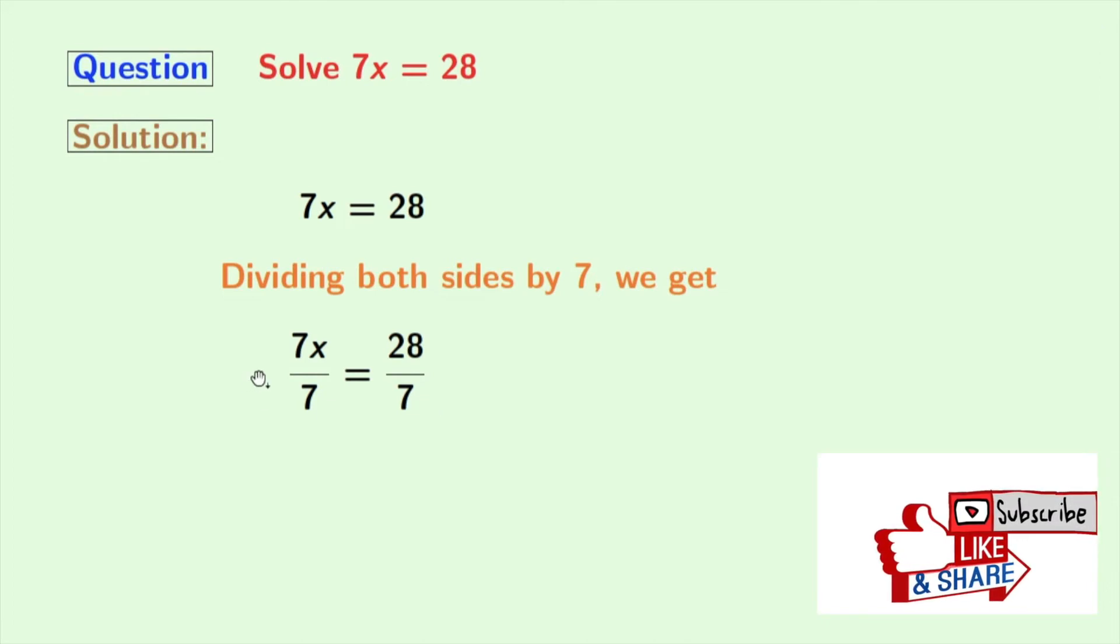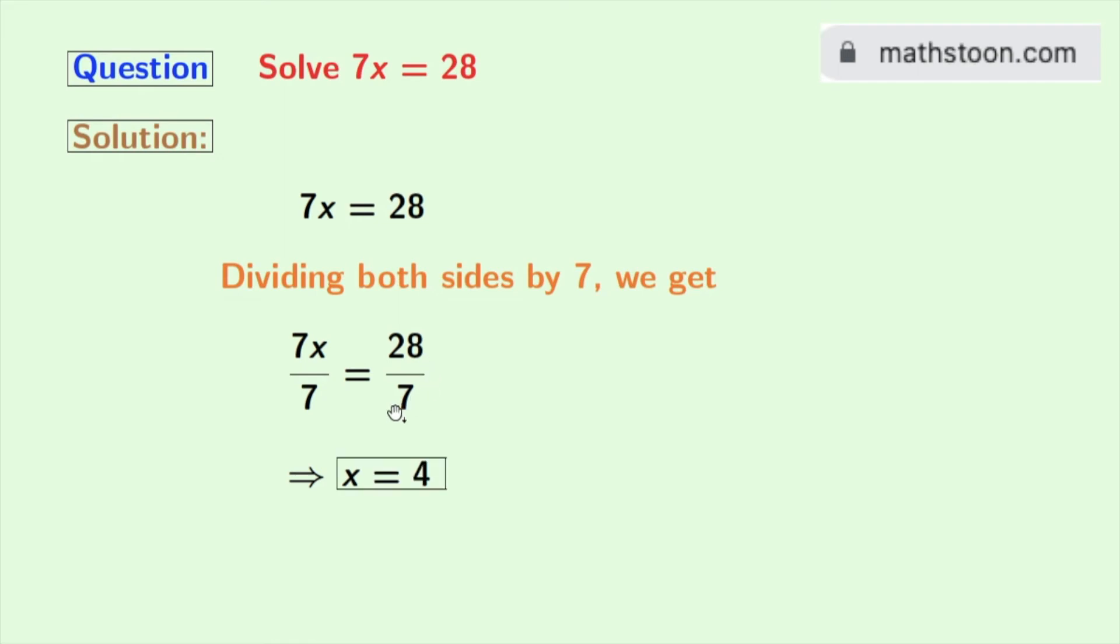Now look, in the left-hand side, 7 gets cancelled and we are left with x. And in the right-hand side, 28 by 7 means 4. So finally we get x equals 4 as our answer.